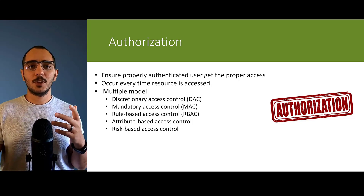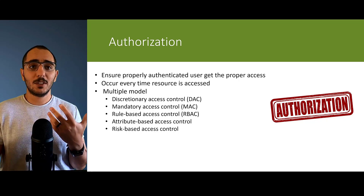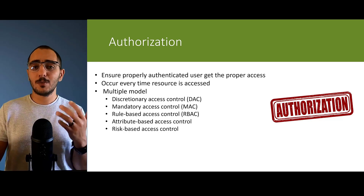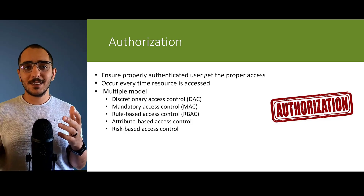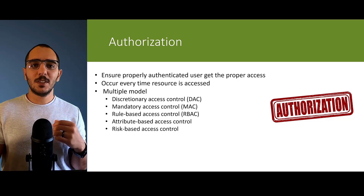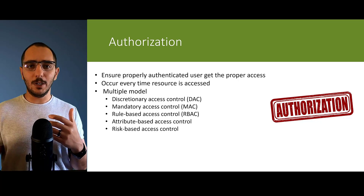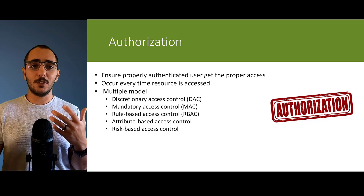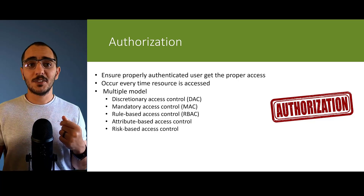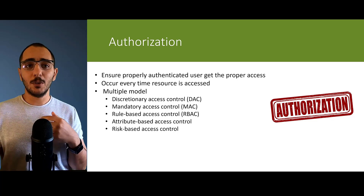There is also Attribute-Based Access Control (ABAC), which involves a combination of multiple attributes: a subject (who is accessing), an object (what is being accessed), an action (what the subject is attempting — like read, write, or comment), and context (any other supporting information). Risk-Based Access Control evaluates the request based on location, time, origin, sensitivity of the object, and history of the user.